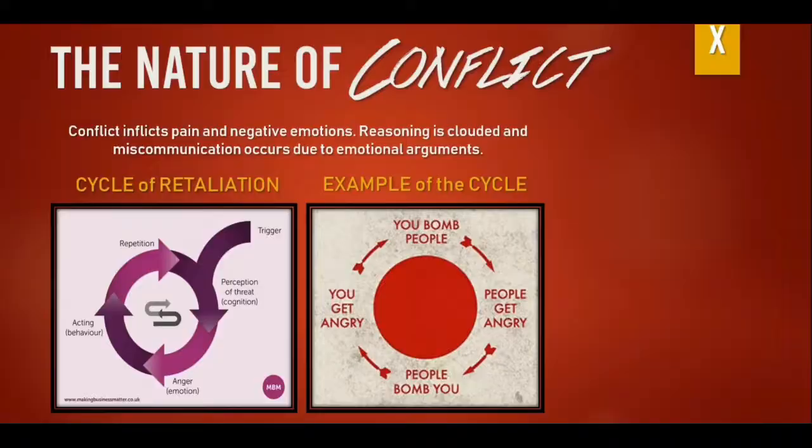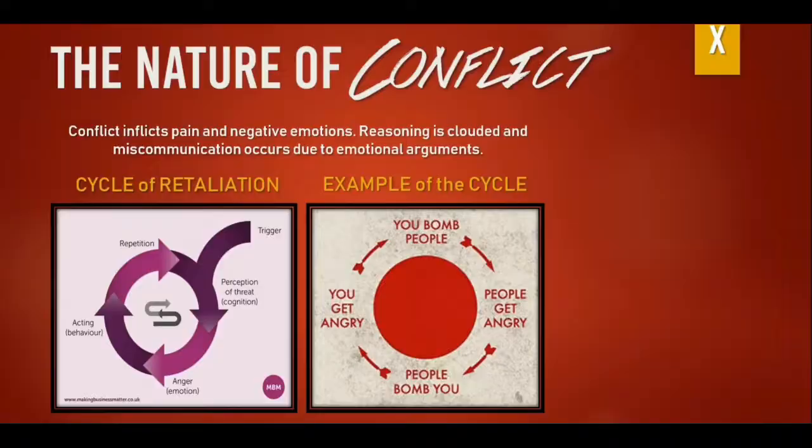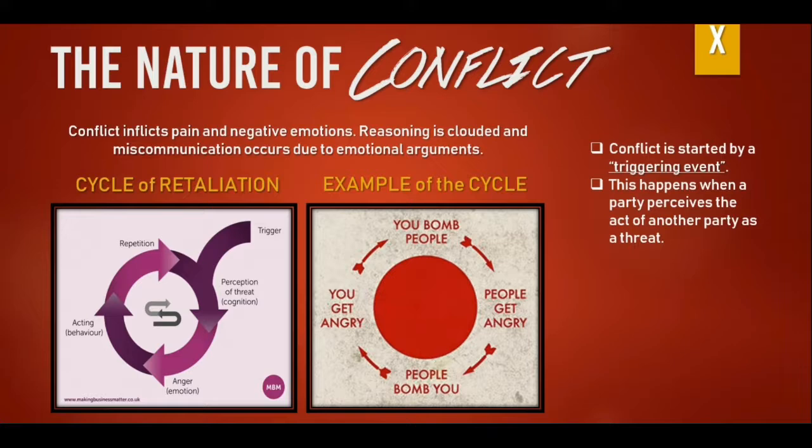Conflicts are started by triggering events. When we say triggering event, this is when a party perceives the side of another party as a threat. But all of these can stop with the intervention of a third party — also when the two conflicting parties calmly seek a solution for their crisis.